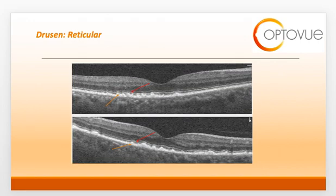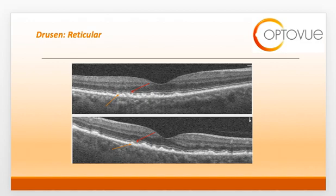This next slide demonstrates reticular drusen, another type of drusen that differs from the previous types because it resides in a subretinal space and are thus called reticular pseudodrusen. They can be confused with drusen, but they're actually a clinically distinct entity located above the RPE. The deposition presents as a hyperreflective material between the RPE and the ISOS junction. Reticular pseudodrusen are associated with progression to advanced AMD, so it's important to be able to recognize them on your OCT scan.